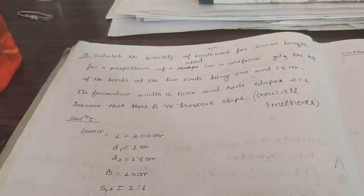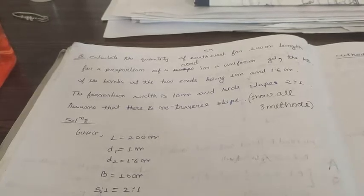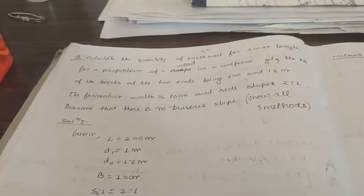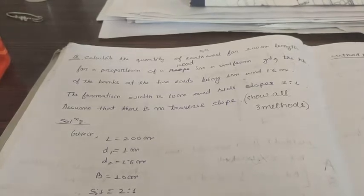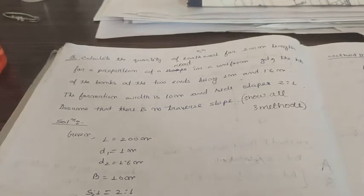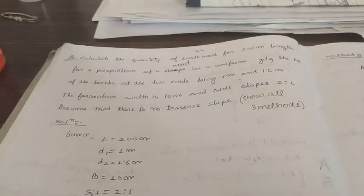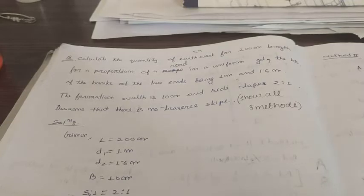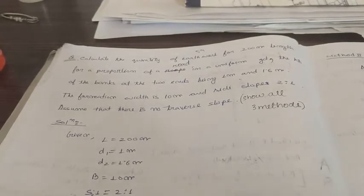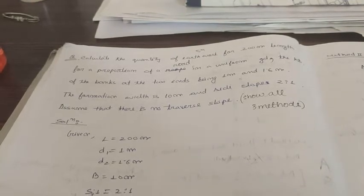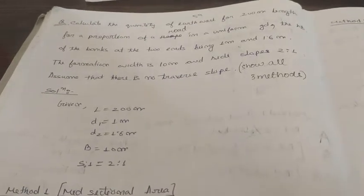The question is: calculate the quantity of earthwork for 200 meter length for a proportion of a road in uniform ground. The height of the banks at the two ends being 1 meter and 1.6 meters. The formation width is 10 meters and side slope is 2:1.